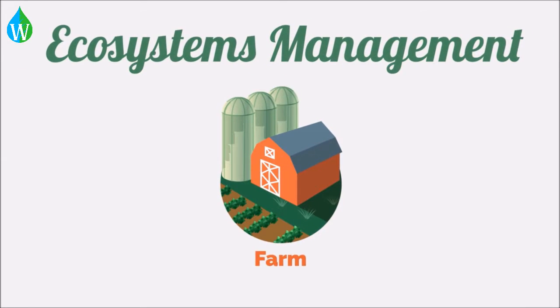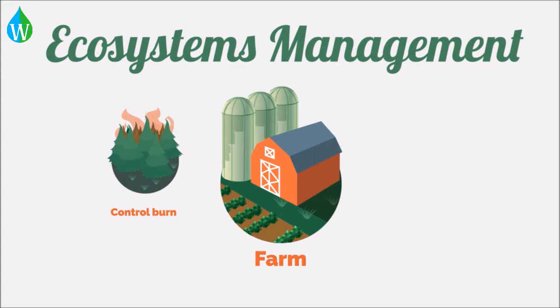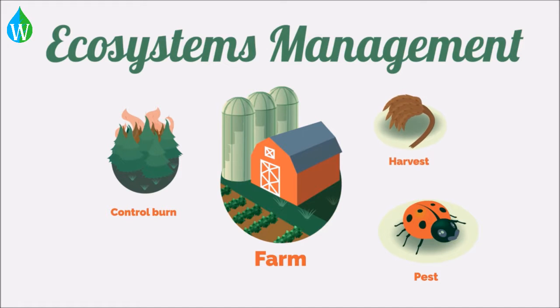Ecosystem management is achieved through a variety of measures, including controlled burns, pesticide application, selected harvesting, or removal of a certain resource.